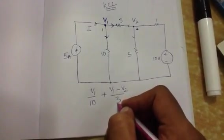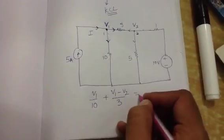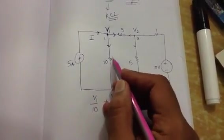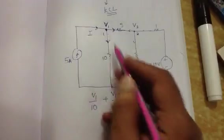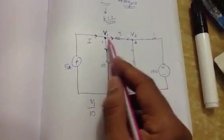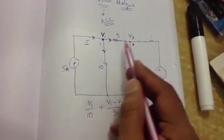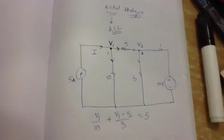I hope you got the step. Because this is totally independent and it belongs only to V1, we have taken it directly V1 by 10. But because this is being shared, we take V1 minus V2 by 3. Remember the mesh analysis concept?